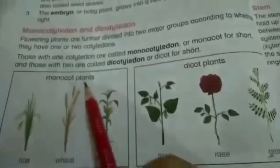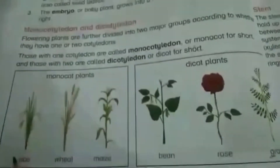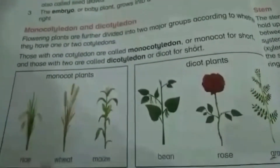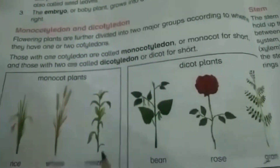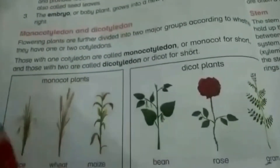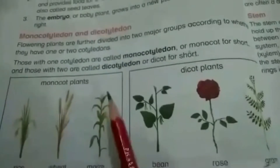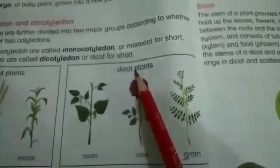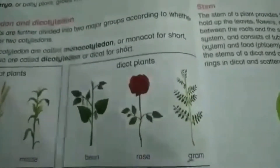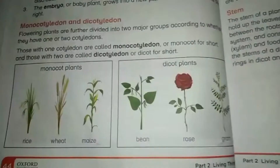Here are some examples of monocot plants: rice, wheat, and maize. These plant seeds have just one cotyledon. Examples of dicot plants are bean, rose, and gram.